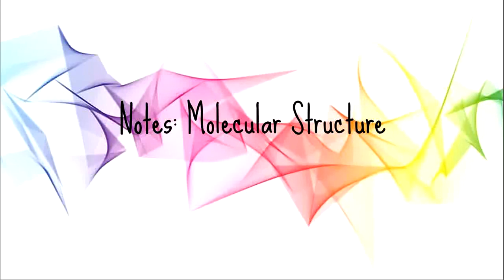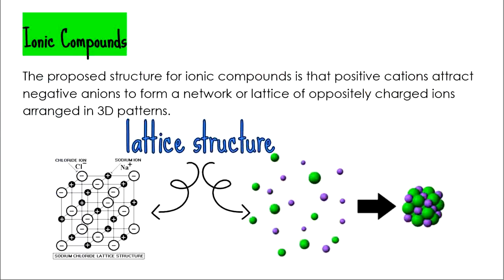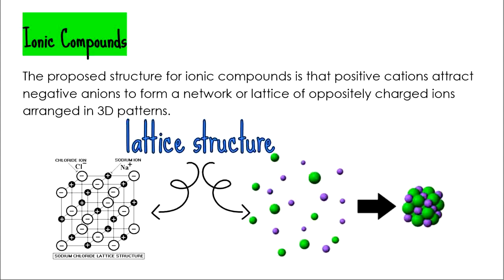We're going to talk about the structure of ionic compounds and the structure of covalent molecules. The structure of an ionic compound — any ionic compound — is called a lattice structure. This is where positive cations are attracted to negative anions to form a network or lattice of oppositely charged ions arranged in a 3D pattern. You can imagine it goes negative, positive, negative, positive in a 3D structure. This lattice structure applies to all ionic compounds.